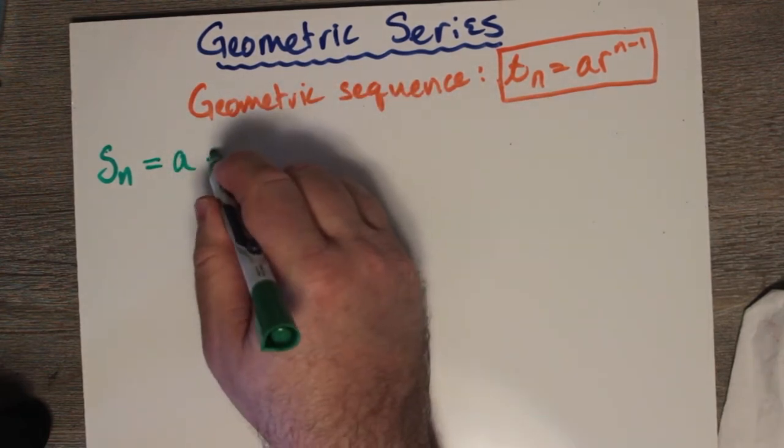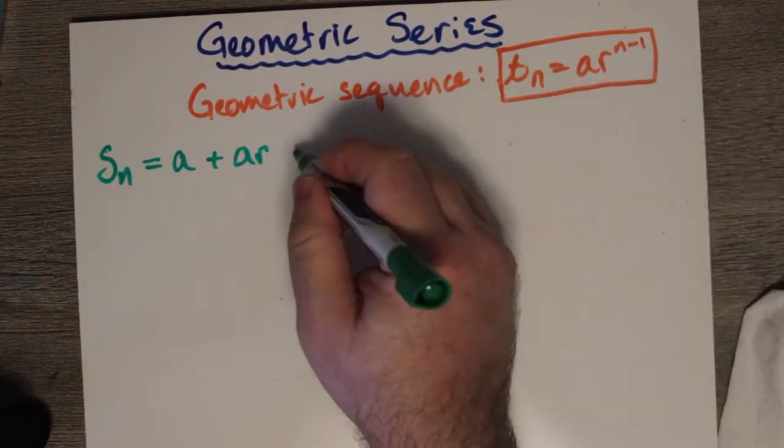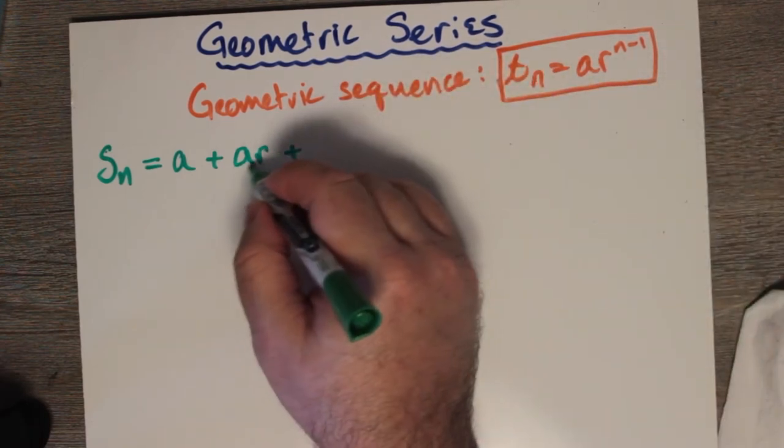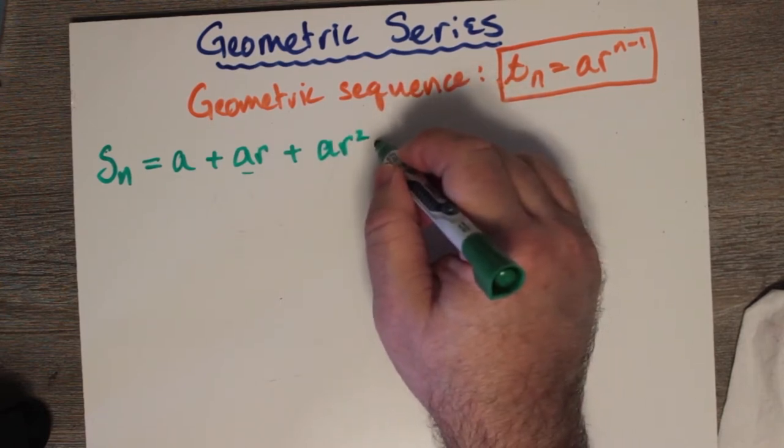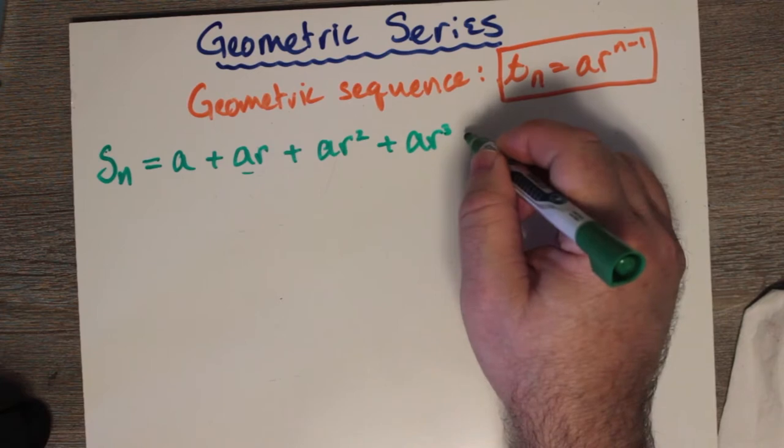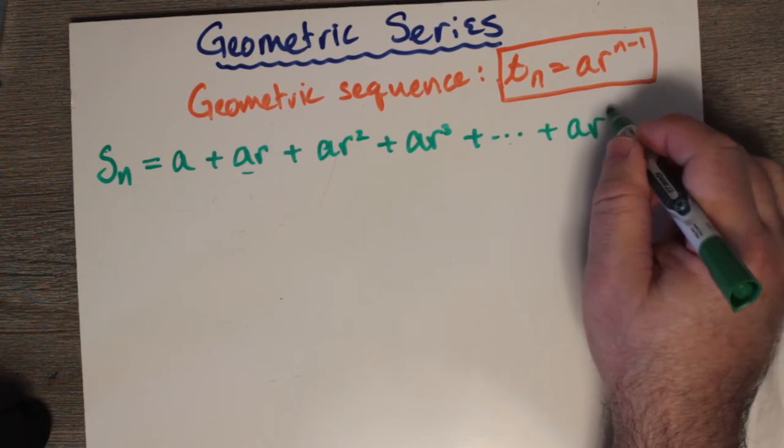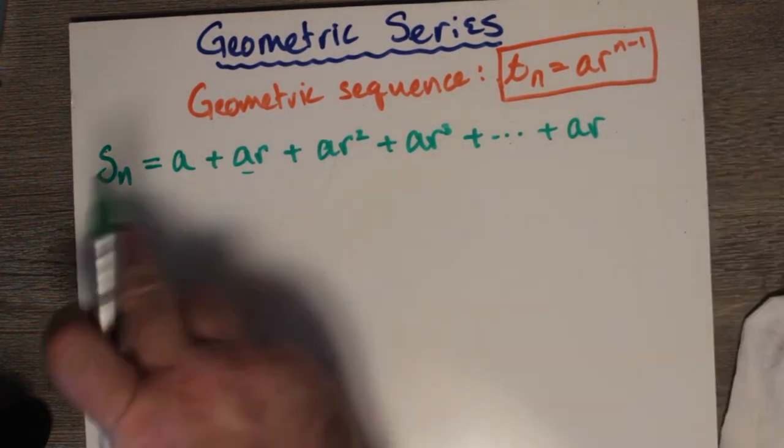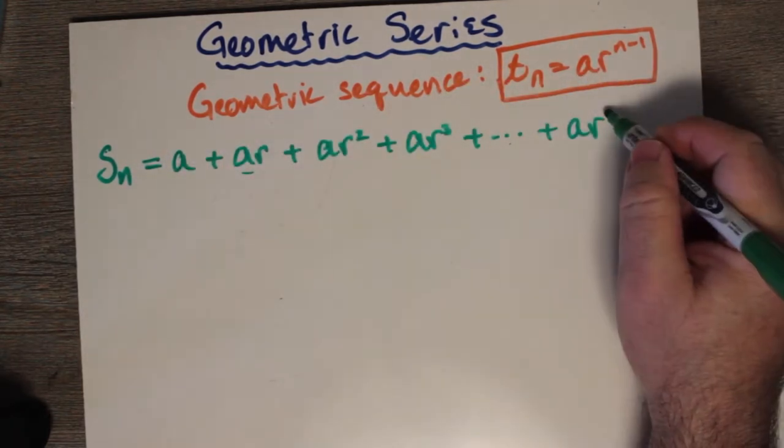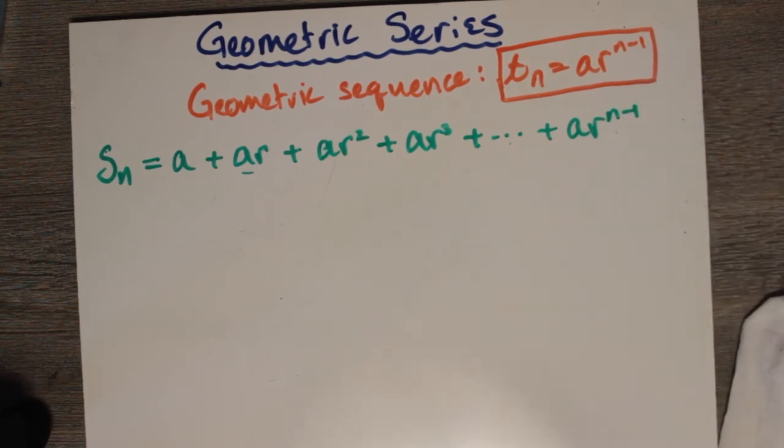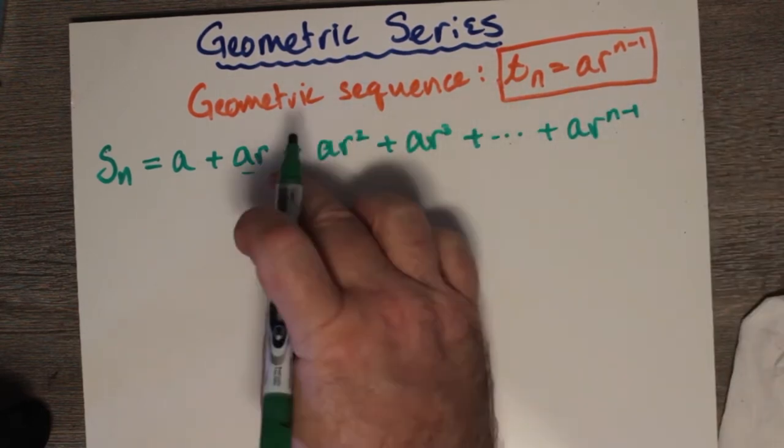Well, we start with the first term, right? And we add the second term. That's multiplying the first term by the common ratio. Then we multiply this second term by the common ratio again to make ar squared. And then we make ar cubed. You get the idea. So, this becomes ar to the n-1, because the last term, if we're going only n terms, and the first term doesn't have an r, that leads you to believe that n minus 1 is the exponent on your last term for this one. So, this is your sum.